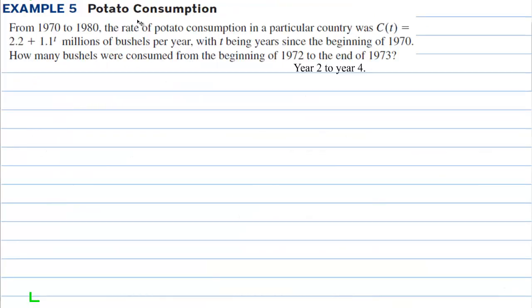In example 5, we have potato consumption. It says from 1970 to 1980, the rate of potato consumption in a particular country was c(t) = this function. But this is the rate of potatoes, not how many. This is in millions of bushels per year with t being years since the beginning of 1970. So 1970 is the year 0 according to our function. How many bushels were consumed from the beginning of 1972 to the end of 1973? So this is from year 2 to year 4. We're going to integrate this function from 2 to 4 to go from the rate of consumption to the amount of potatoes that were consumed.